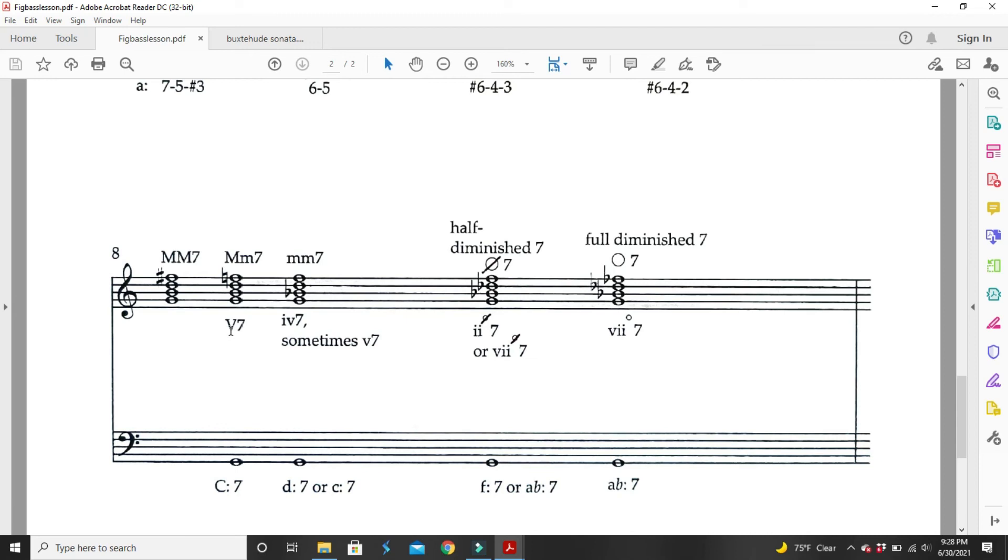The types of seventh chords: the major minor seventh. So, that's a major triad with a minor third on top. A minor minor seventh. So, that's a minor triad with a minor third. For instance, a G minor triad with an F natural on top.